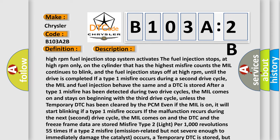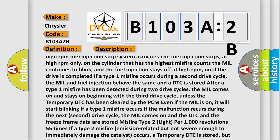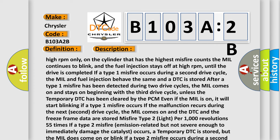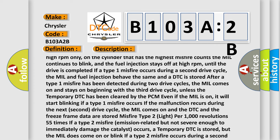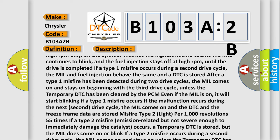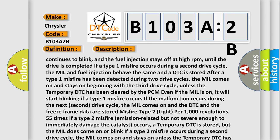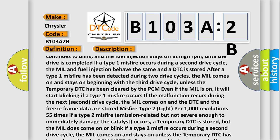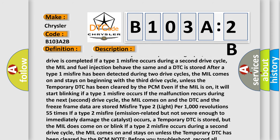If the ECT is less than minus 7 degrees Celsius, plus 19 degrees Fahrenheit at engine startup, this diagnostic is disabled until the ECT is more than plus 21 degrees Celsius, plus 69 degrees Fahrenheit. The fuel level is more than 10 percent.